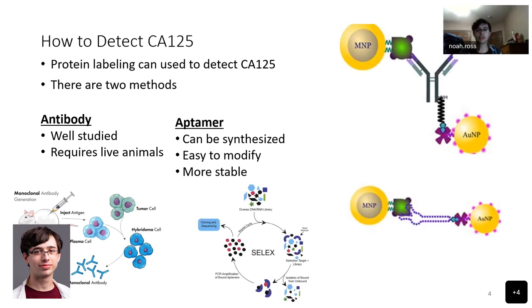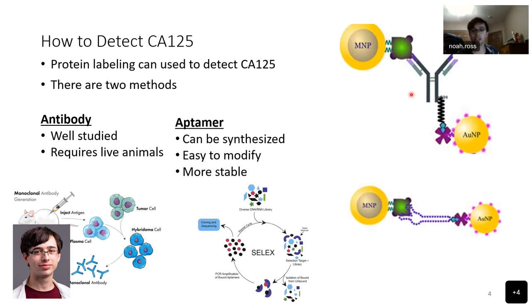One method used currently to detect CA-125 is protein labeling with antibodies. The top picture on the right shows a protein — this green thing — attached to an antibody, this Y shape, with a label, this gold, and a metal nanoparticle, which is used to separate it from the rest of the blood with a magnet.